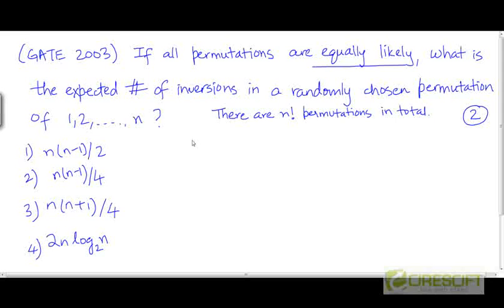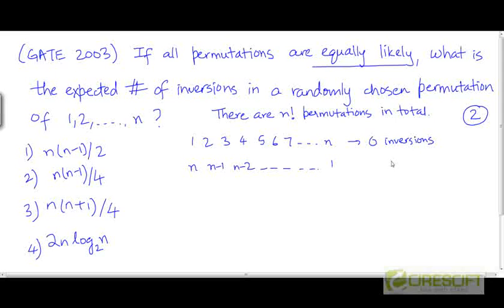If we look at two specific permutations out of these n factorials: the sorted sequence of numbers — this is one permutation among these n factorials — and another permutation, the reverse sorted sequence. The number of inversions for the sorted permutation is 0. The number of inversions in the reverse sorted permutation is nC2, because every time you choose a pair of elements from the reverse sorted sequence, the element on the left is going to be larger than the element on the right.